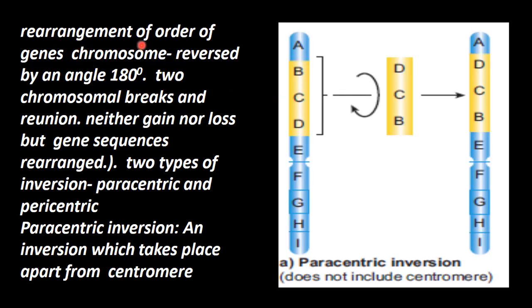There is rearrangement of order of genes in the chromosome. The chromosome odhya ori part is cut off, it is reversed by an angle of 180 degree. There are two chromosomal breaks and reunion.